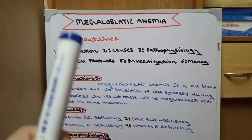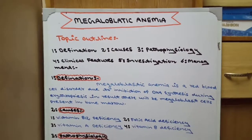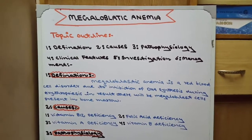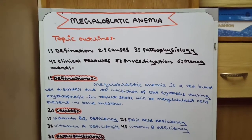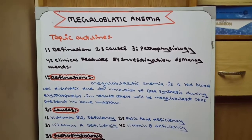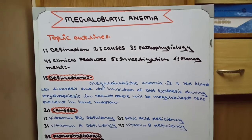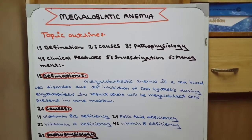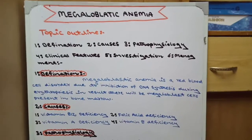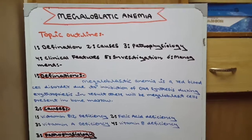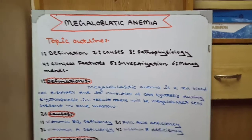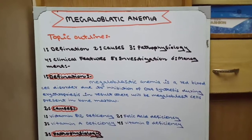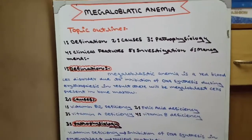Mega ka kya matlab hai? Bada — meaning 'big'. Blast ka kya matlab hai? Cell. Anemia yaani hemoglobin ki deficiency ya RBC ki deficiency. Toh megaloblastic anemia mein kya hota hai? Ismein bade cell bante hain, lekin woh immature cell hote hain, jo mature hone se pehle hi die ho jate hain. Yeh hai megaloblastic ka matlab.